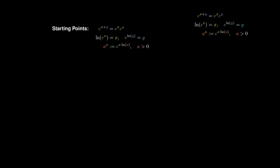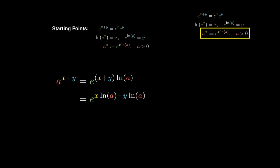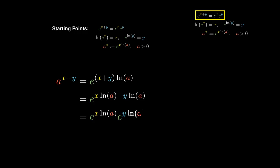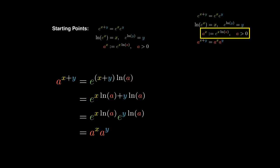Let's first consider a to the x plus y. Since this is an exponential with base a, we can rewrite it as an exponential in base e. Since ln a is a constant, we can distribute it over addition. And since exponentials convert addition into multiplication, we obtain the product of e to the x ln a and e to the y ln a. However, these are the same as the expanded expressions for a to the x and a to the y. This tells us that replacing e with a still preserves the addition to multiplication property.